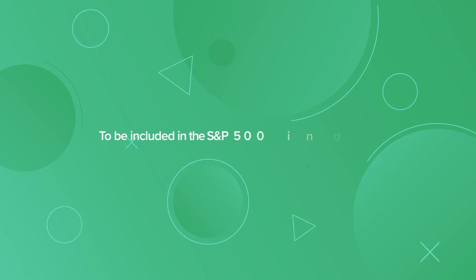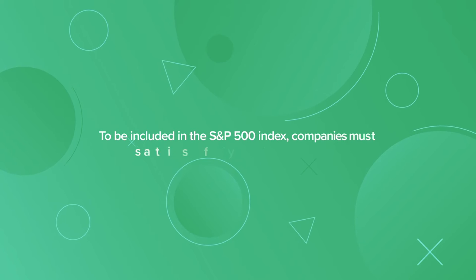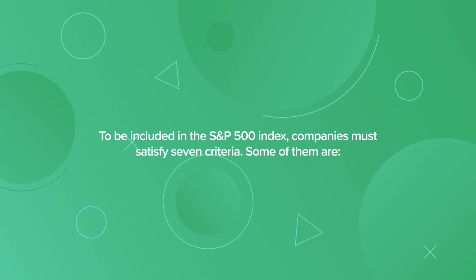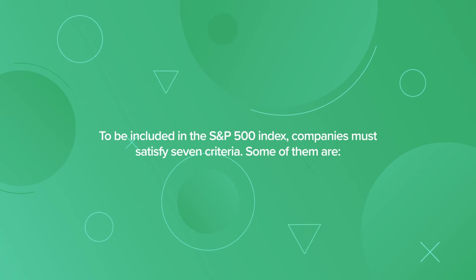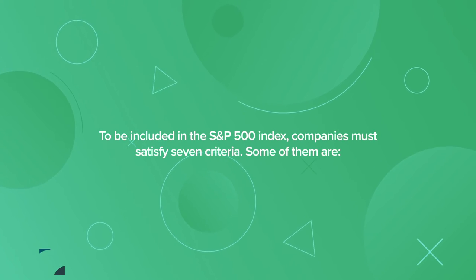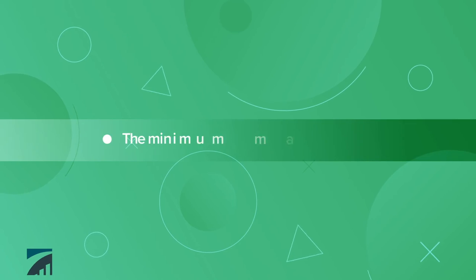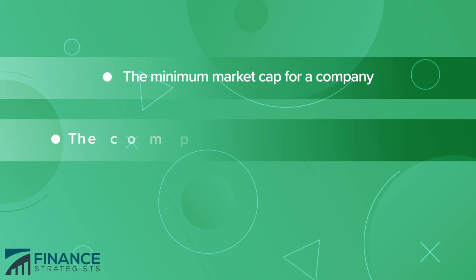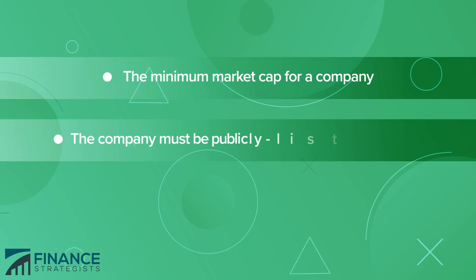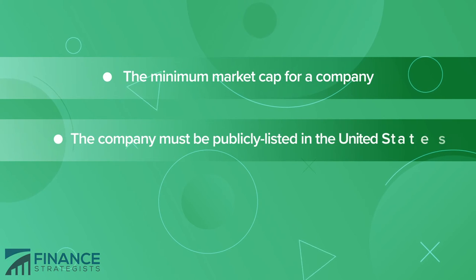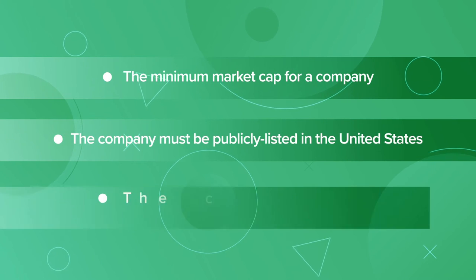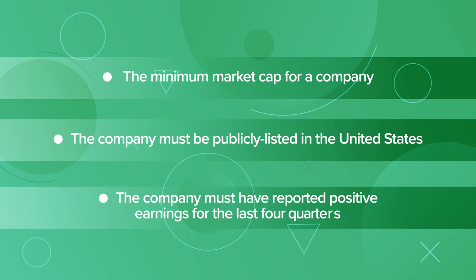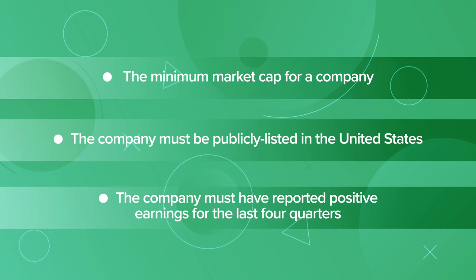To be included in the S&P 500 index, companies must satisfy seven criteria. Some of them are: a minimum market cap for a company, the company must be publicly listed in the United States, and the company must have reported positive earnings for the last four quarters.